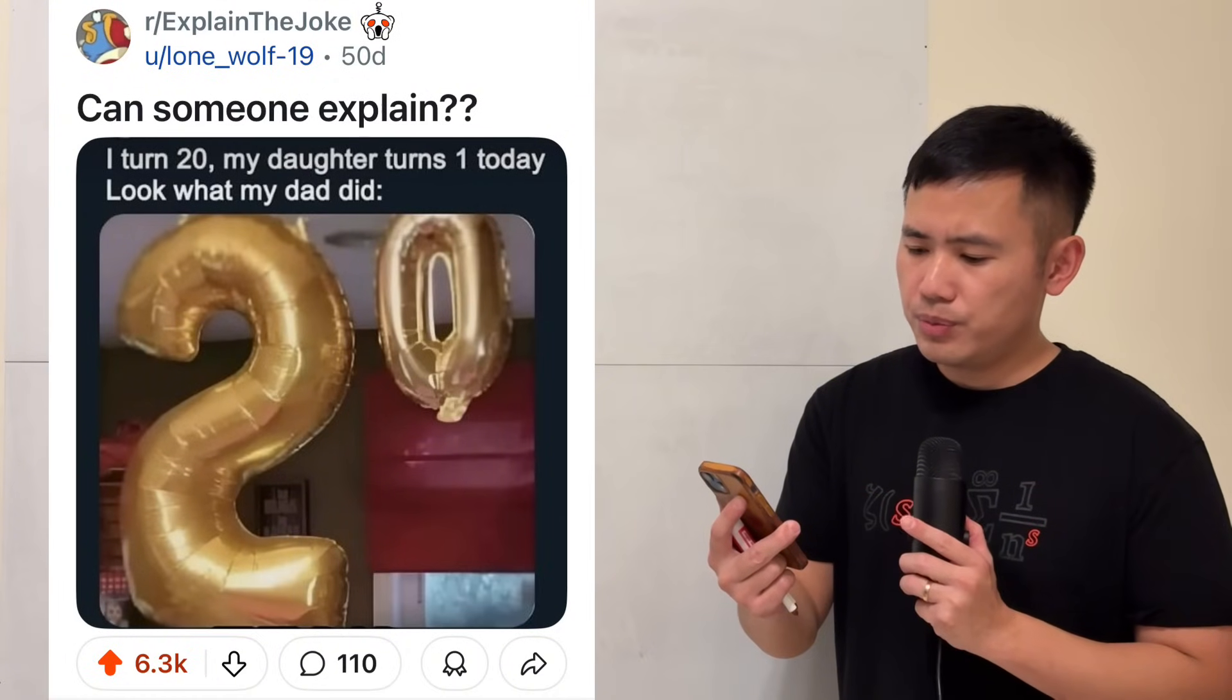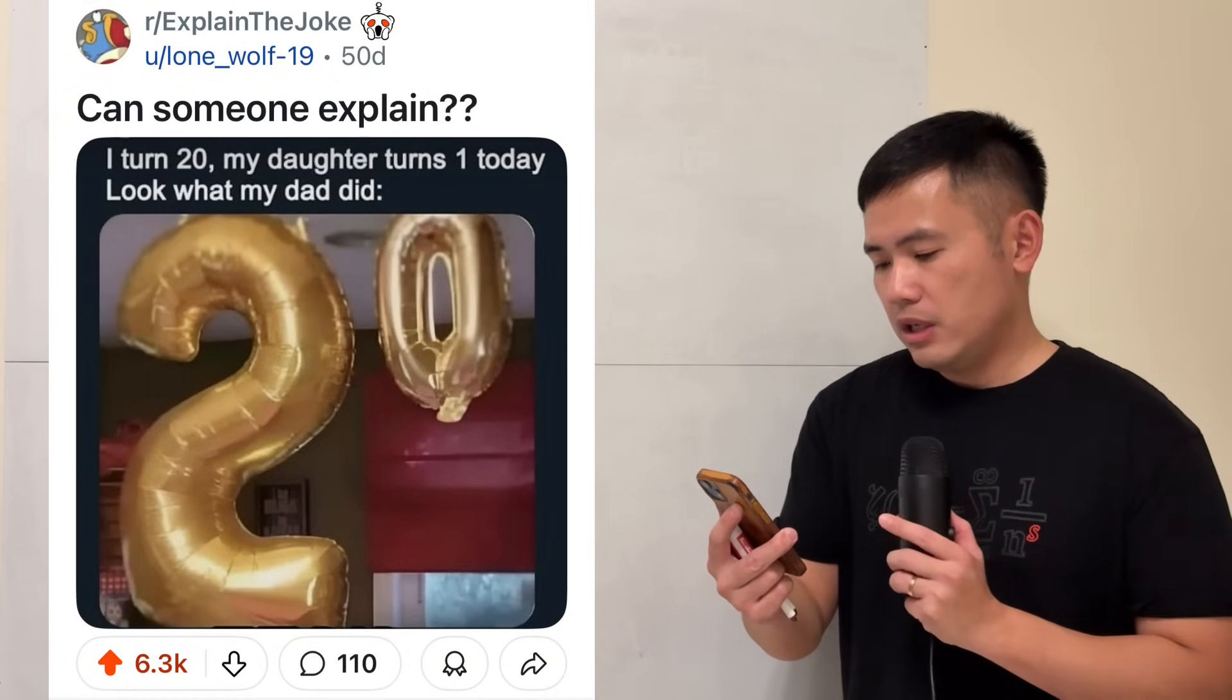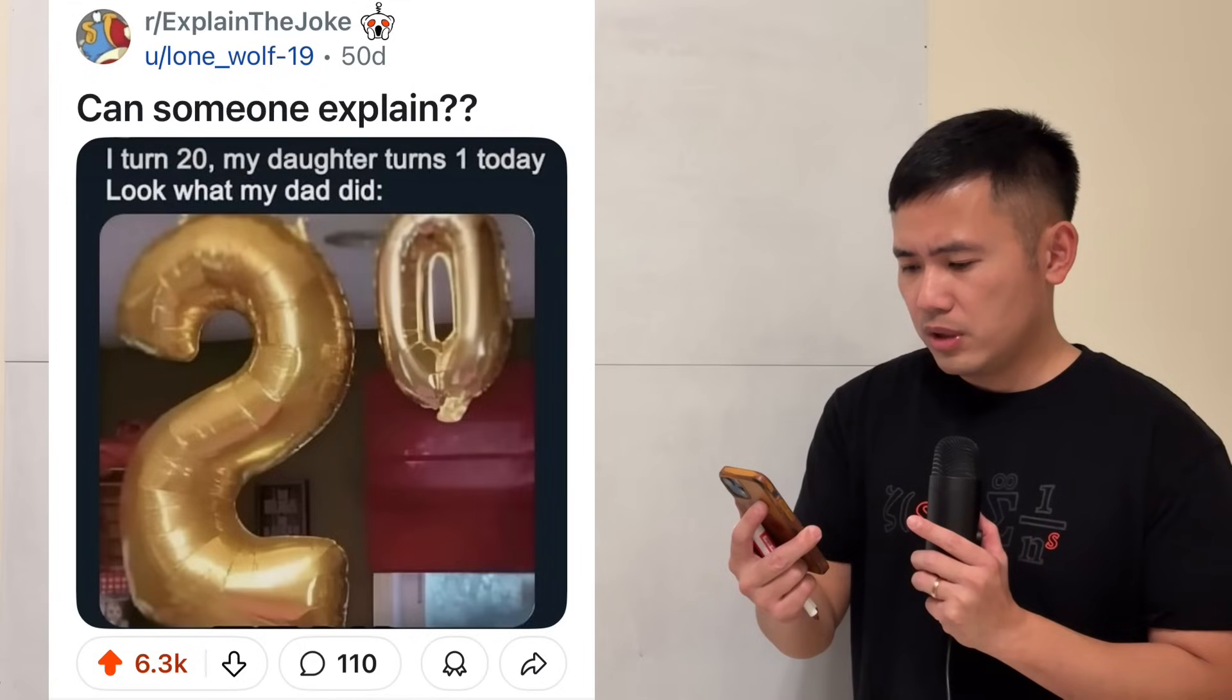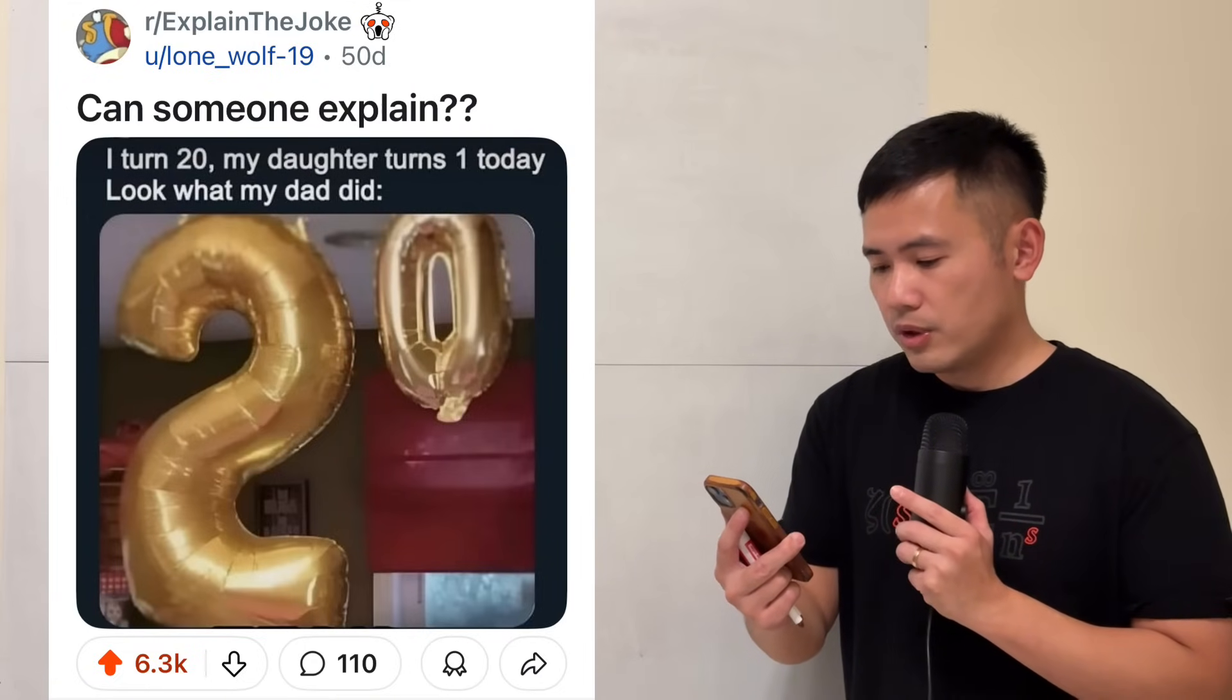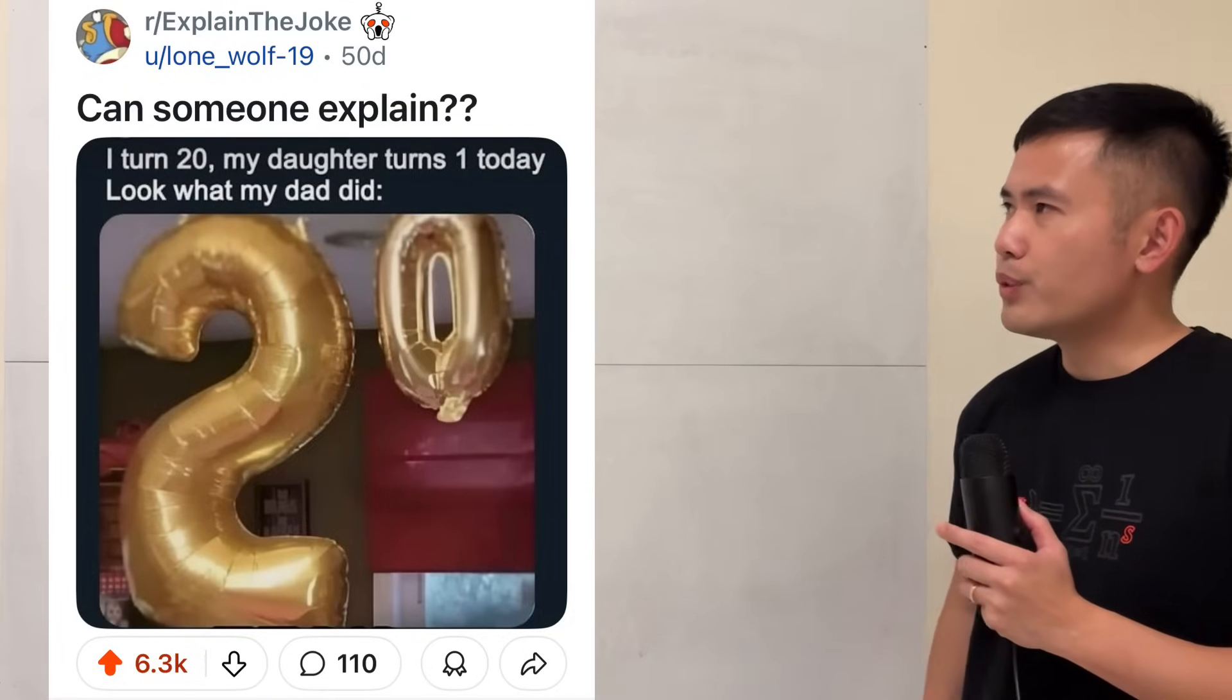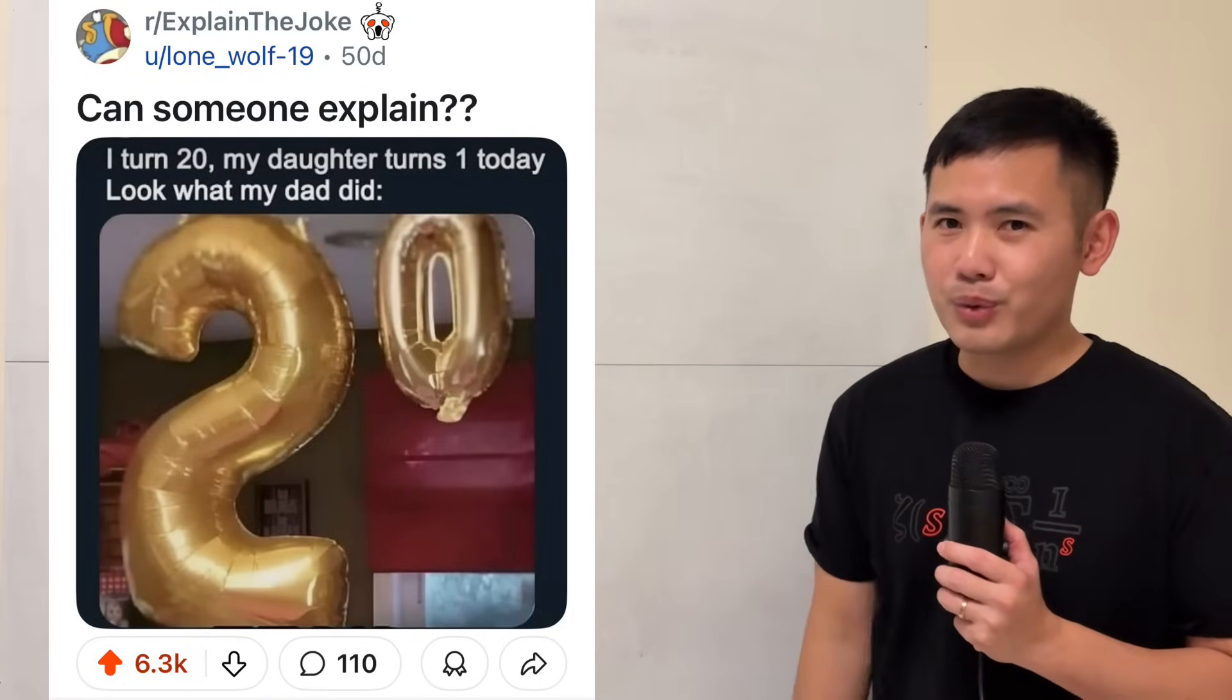Here we have these two balloons. The first one is in the shape of a 2, and the second one is in the shape of 0, but the 0 is in the top right corner and it's also much smaller. Well first, we have 2 and 0, so if you put them together, they look like 20.